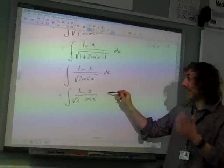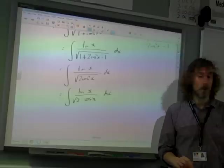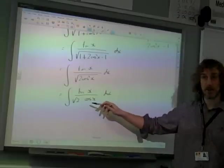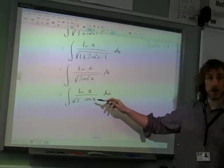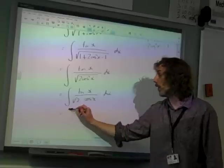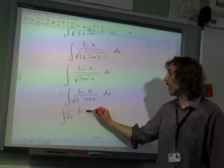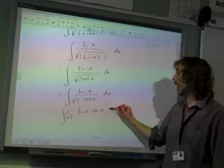Now the square root of 2 cos squared x is root 2 times cos x. And cos x is, as we've already established, 1 over cos x is sec x. So actually what we've got here is tan x sec x all divided by root 2.